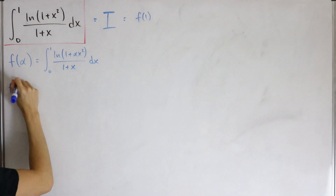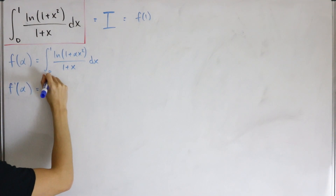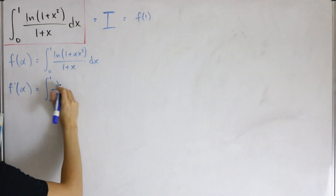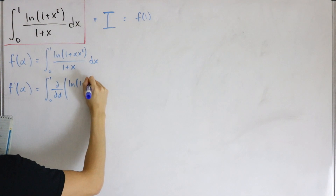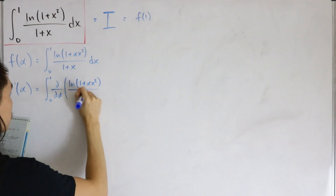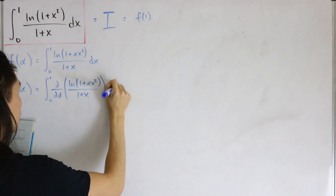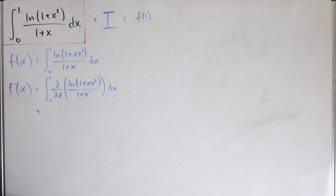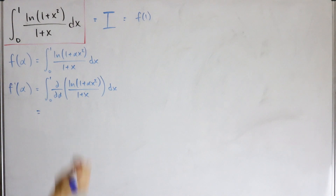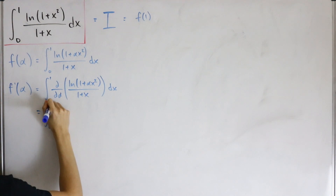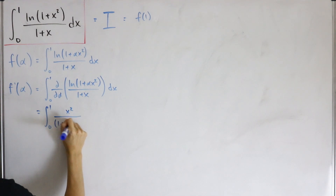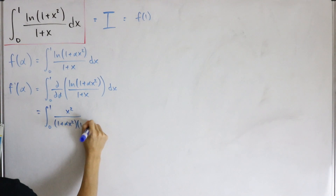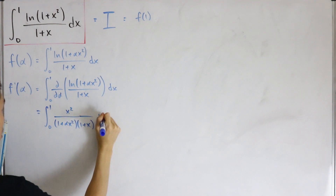So f prime of alpha equals the integral from zero to one of the partial derivative with respect to alpha of ln(1 + αx²) divided by (1 + x), dx. Differentiating, using the derivative property of the natural log, we get the integral from zero to one of x squared divided by (1 + αx²)(1 + x), dx.